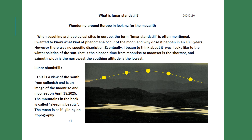When seeking archaeological sites in Europe, the term 'lunar standstill' is often mentioned. I wanted to know what kind of phenomena occur with the moon and why it happens in an 18.6-year cycle. However, there was no specific description. Eventually I began to think it looks like the winter solstice of the sun — that is, the elapsed time from moonrise to moonset is the shortest, azimuth width is the narrowest, and the southing altitude is the lowest. This is a view of the south from Callanish, showing moonrise and moonset on April 18, 2025. The mountain in the back is called Sleeping Beauty — the moon appears to glide over the topography.